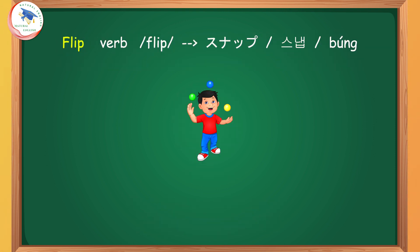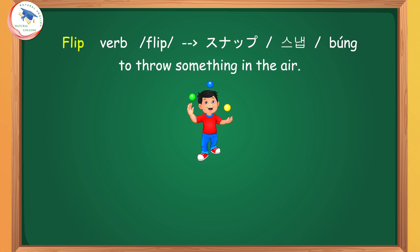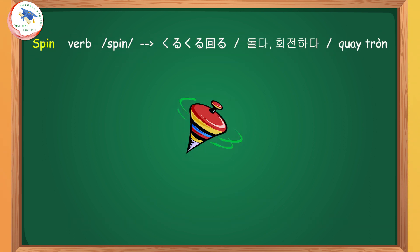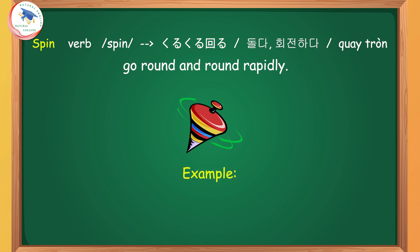Flip: to throw something in the air. Example: He flipped it in the air. They flipped a coin to see which side it landed on. Spin: to go round and round rapidly. Example: The penny spun around. The car spun across the road.